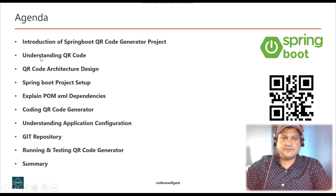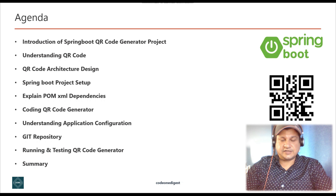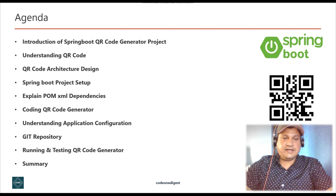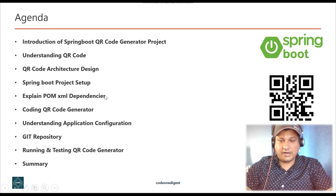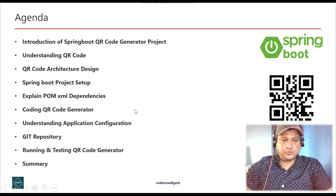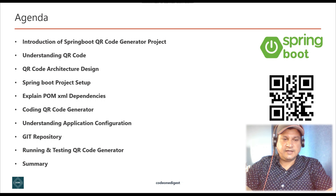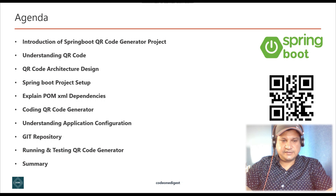I'll give you an introduction of the Spring Boot QR code generator project, then we'll understand what is a QR code. I'll show you the architecture of this project — what modules and components are there. Then I'll show you how to set up the Spring Boot project, explain the pom.xml file and dependencies required, write the code using libraries to generate the QR code, show the application configuration, give a reference to my GitHub repository, and finally run and test the application.